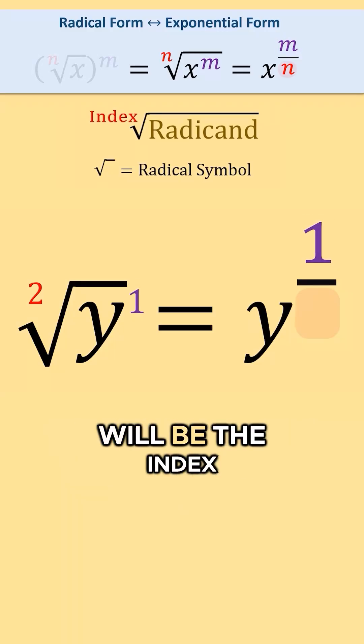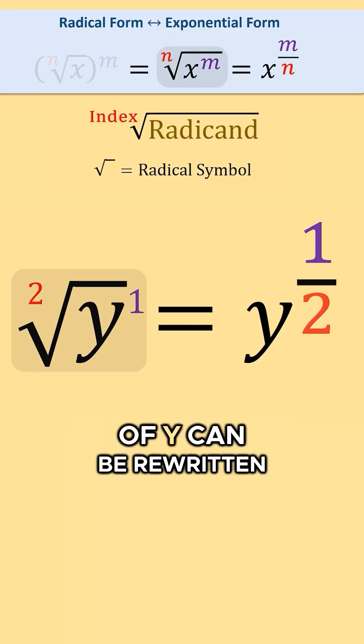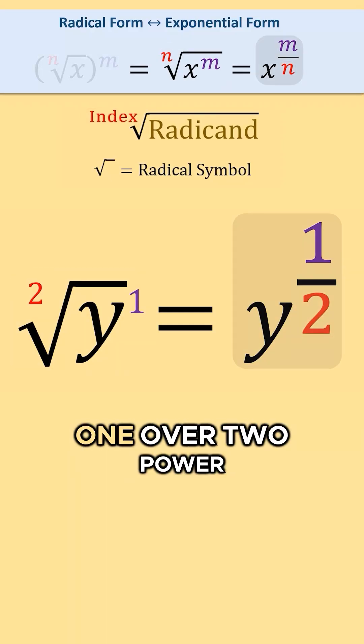The denominator of this power will be the index of the radical, which is 2 here. So, the square root of y can be rewritten as y to the 1 over 2 power.